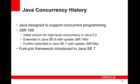Java SE 7 includes updates to the concurrency APIs first introduced in Java SE 5 — this is an update to an update. The original utilities were defined in JSR 166, extended in JSR 166x for Java SE 6, and extended further through JSR 166y for Java SE 7.